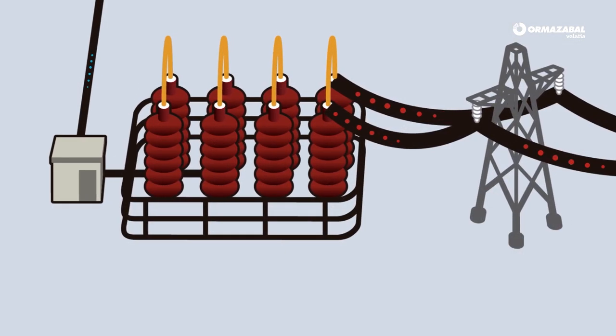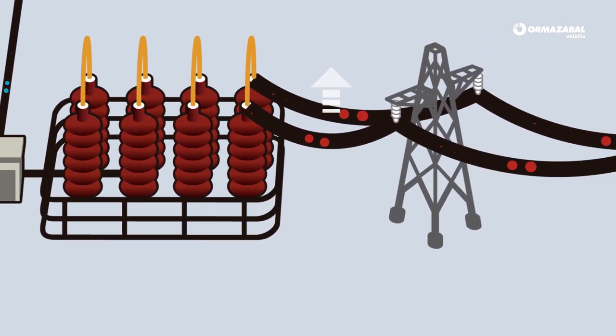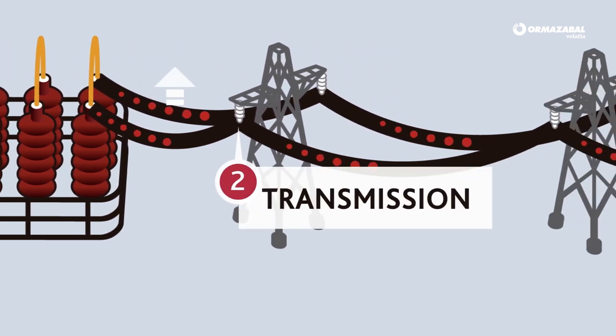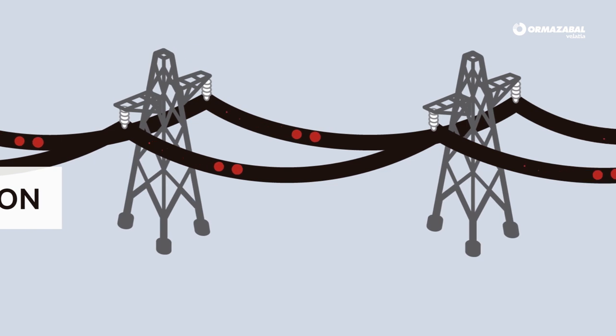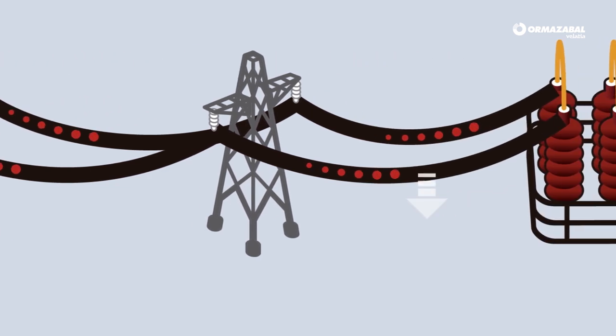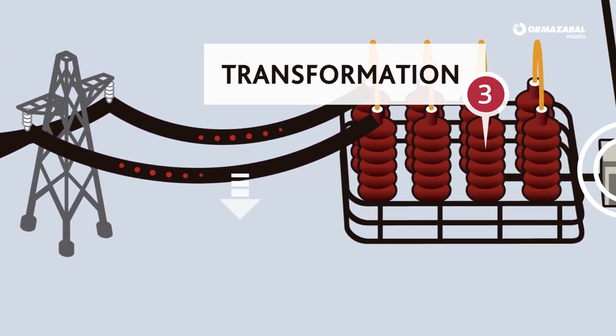The efficient way to do this is in high voltage. But this voltage must be reduced before its consumption. This means it has to be transferred. This is what substations do.